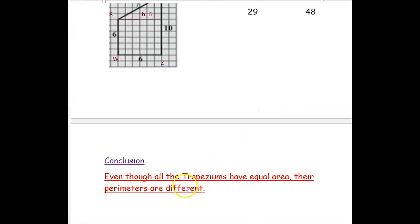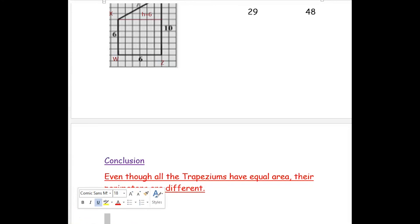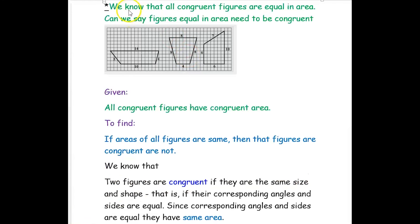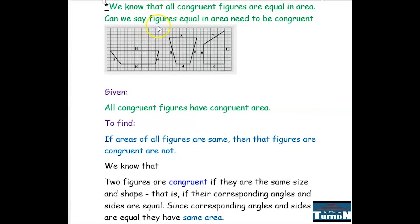We can conclude that even though all the trapeziums have equal area, their perimeters are different. Now let us see the next question: we know that all congruent figures are equal in area. Can we say figures equal in area need to be congruent?